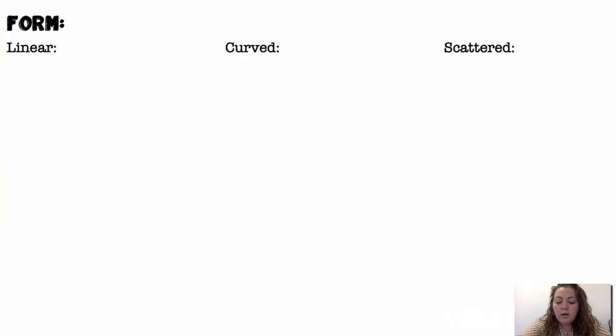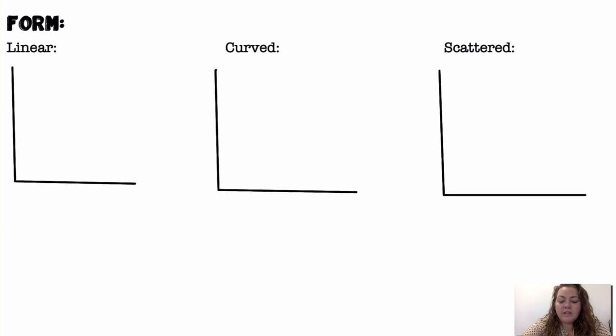Alright, form. Linear, curved, and scattered. These are kind of the more common forms. Most of the time, we're going to be working with linear. So, linear kind of forms a line-like pattern. It's not going to be a perfect line. Curved is going to have some sort of curve in it. And, scattered is where you can't really tell if there's any sort of pattern at all.